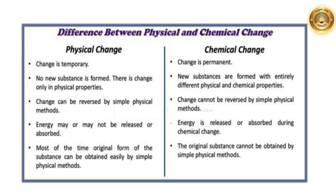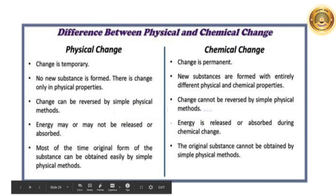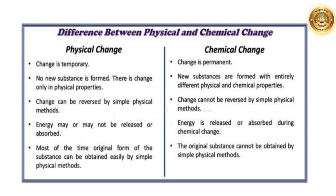Now, let us see the difference between a physical change and a chemical change. A physical change is a temporary change, whereas a chemical change is a permanent one. In a physical change, no new substance is formed — there is change only in physical properties. In a chemical change, new substances are formed with entirely different physical and chemical properties. In a physical change, the change can be reversed by simple physical methods. In a chemical change, the change cannot be reversed by simple physical methods.